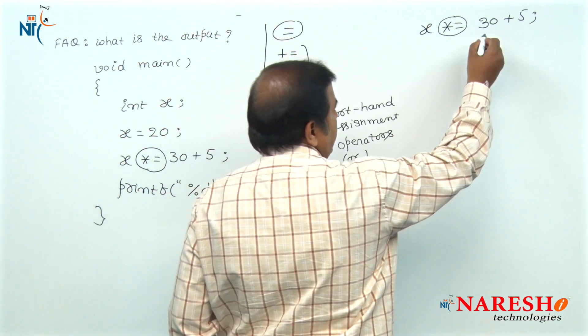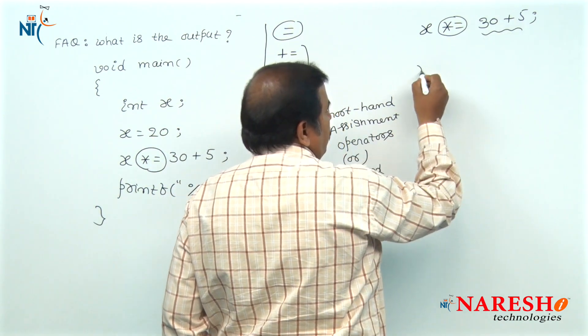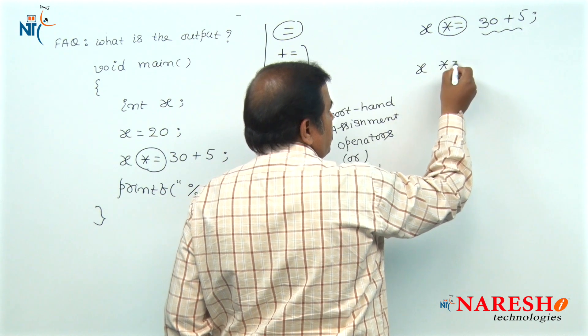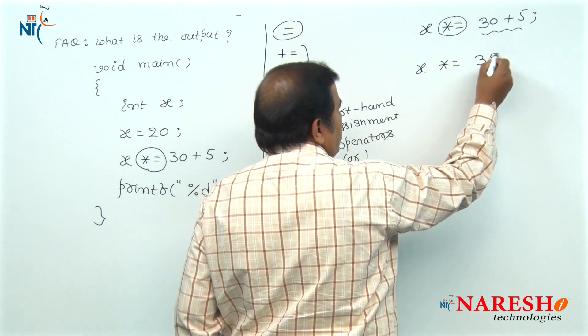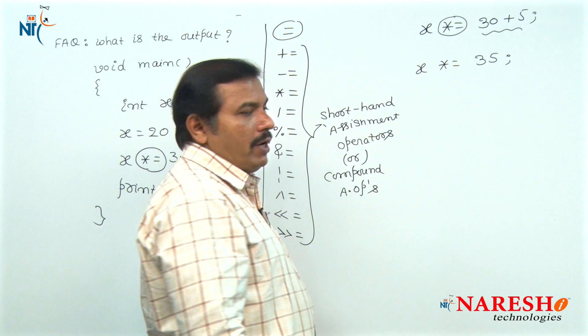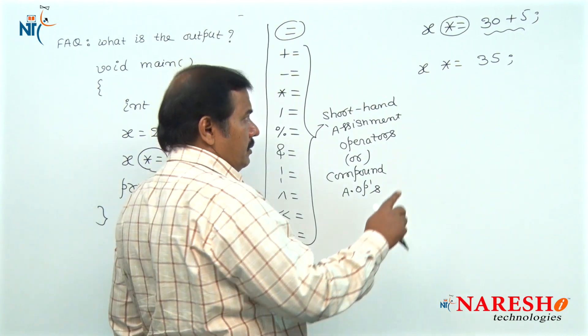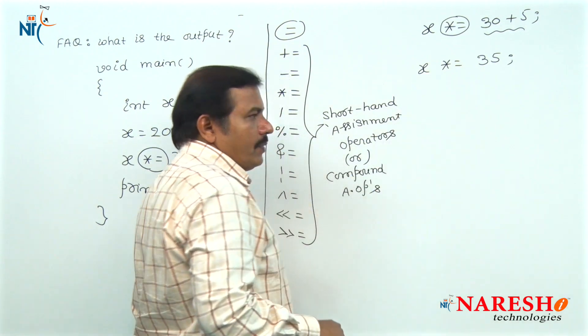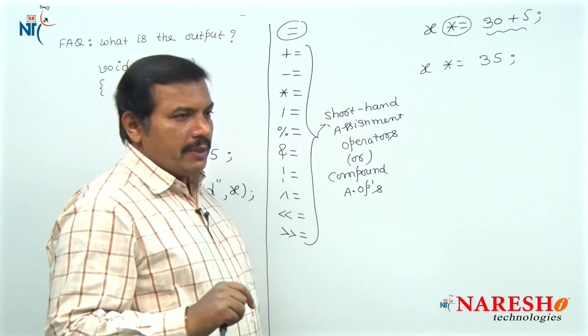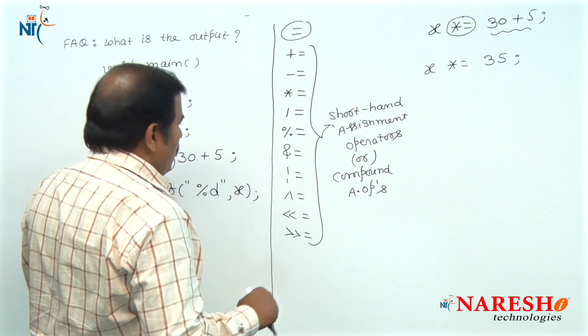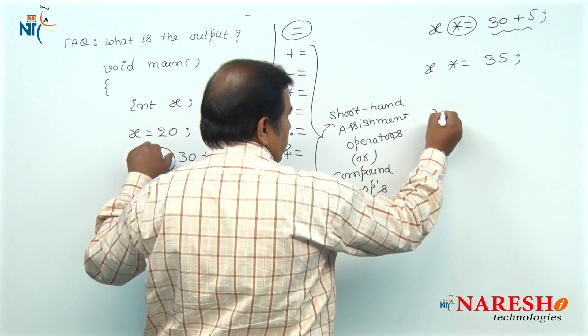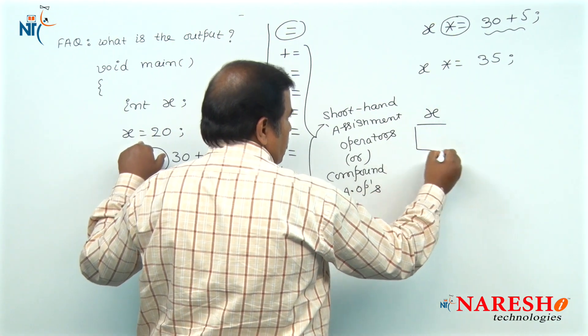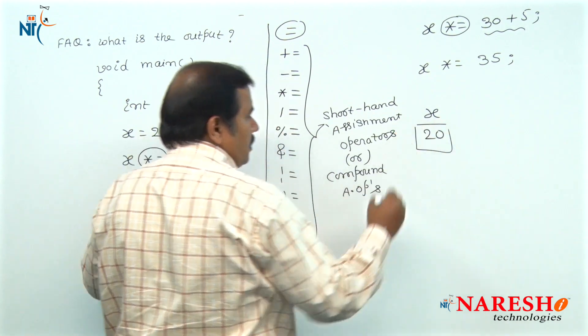First the right side expression value is evaluated first: 30 plus 5 is 35, and then the right side operand value is multiplied with the value of left side operand. The value of x is given as 20.